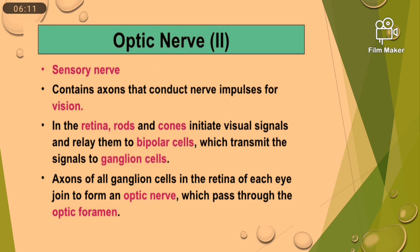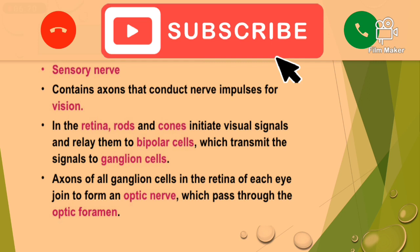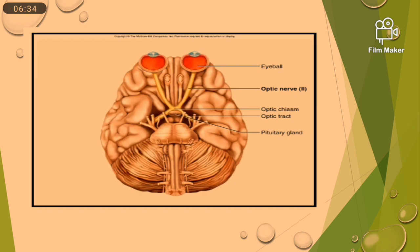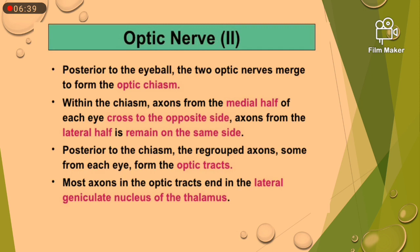In the retina, rods and cones initiate visual signals and relay them to bipolar cells, which transmit the signal to ganglion cells. The axons of all ganglion cells in the retina of each eye join to form an optic nerve, which passes through the optic foramen. The two optic nerves merge to form the optic chiasma. Within the chiasma, axons of the medial half of each eye cross to the opposite side, while axons from the lateral half remain on the same side. Posterior to the chiasma, the regrouped axons from each eye form the optic tract. Most axons in the optic tract end on the lateral geniculate nucleus of the thalamus.